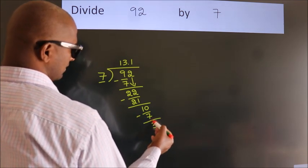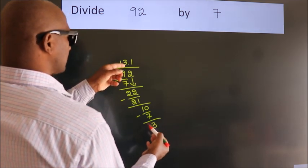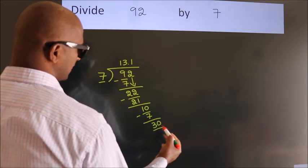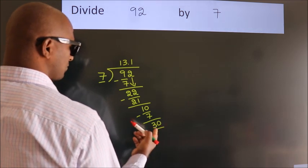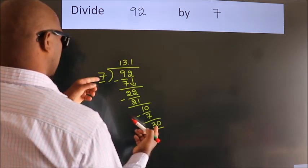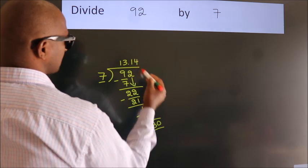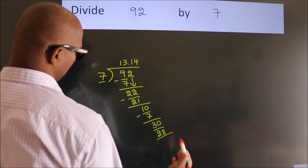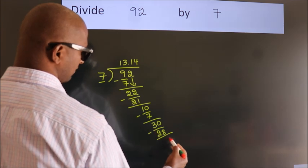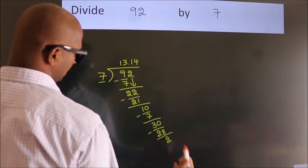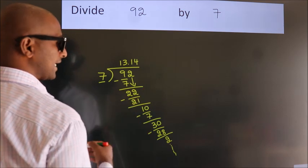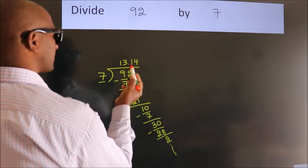After this, we already have the decimal, so directly take 0. So 30. A number close to 30 in the 7 table is 7 fours, 28. Now we subtract. We get 2, and the division continues. It is enough if we do up to 2 decimal places.